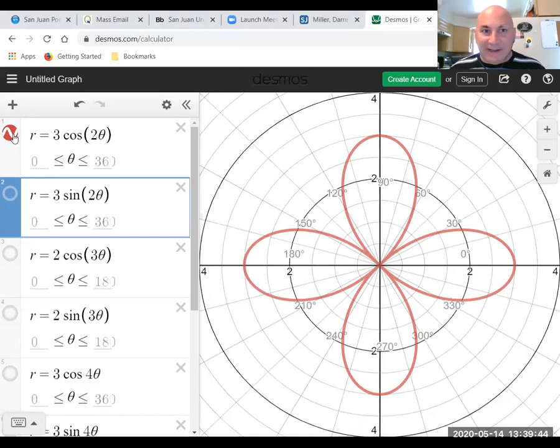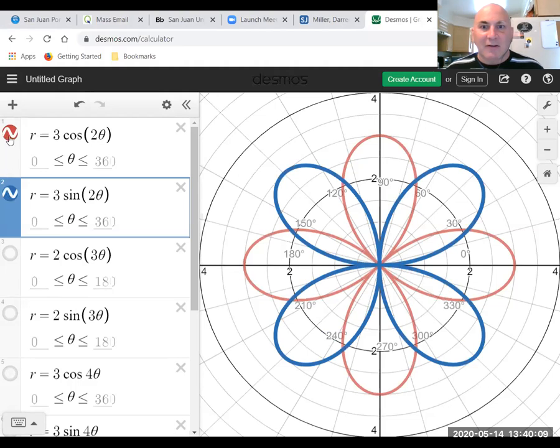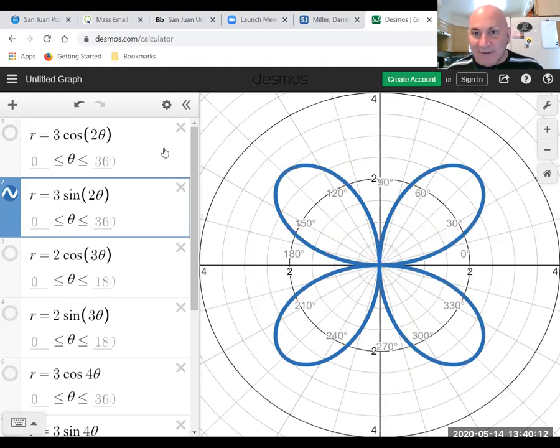You'll notice that the 3 goes up 1, 2, 3. So the petal is 3 units long. And I also note that when n is 2, we're going from 0 to 360 degrees. Okay, let's watch what happens with sine. It's still a four petal graph, and each petal is 1, 2, 3 units long. But it's been rotated for some reason. Also note that when n is 2, we're going from 0 to 360 degrees.